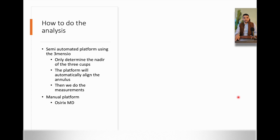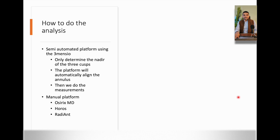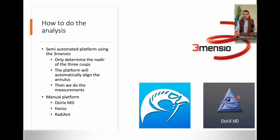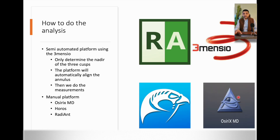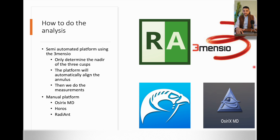The manual platforms are namely OsiriX MD, and there is an OsiriX Lite version. You also have Horus, and Radiant for Windows. Those are the four platforms you can use. 3Mensio is the semi-automated one, and the others are the manual ones.